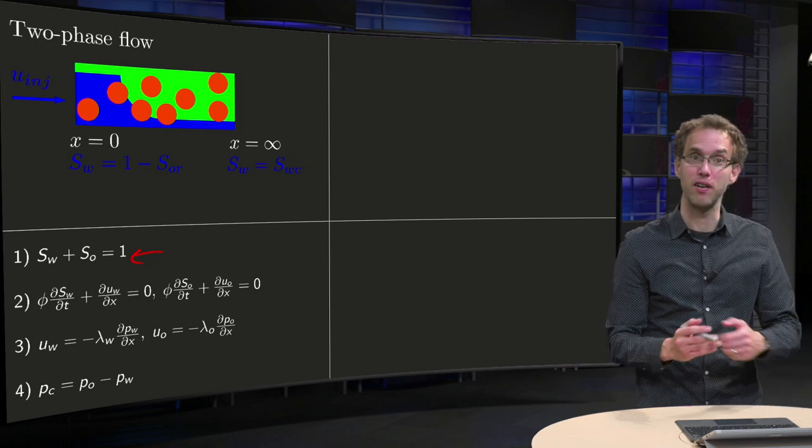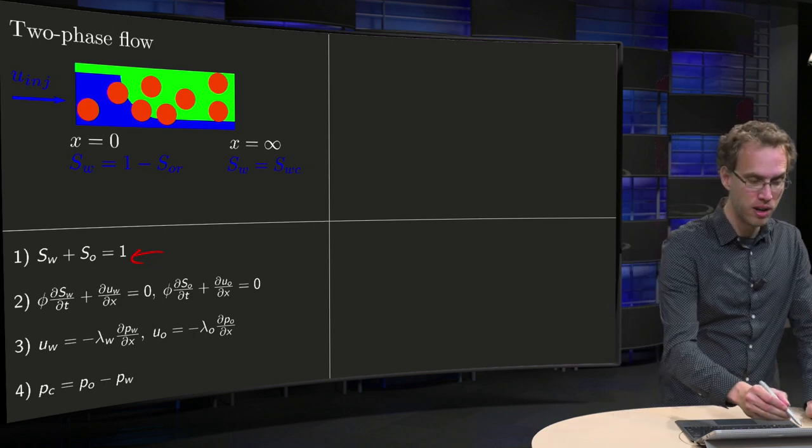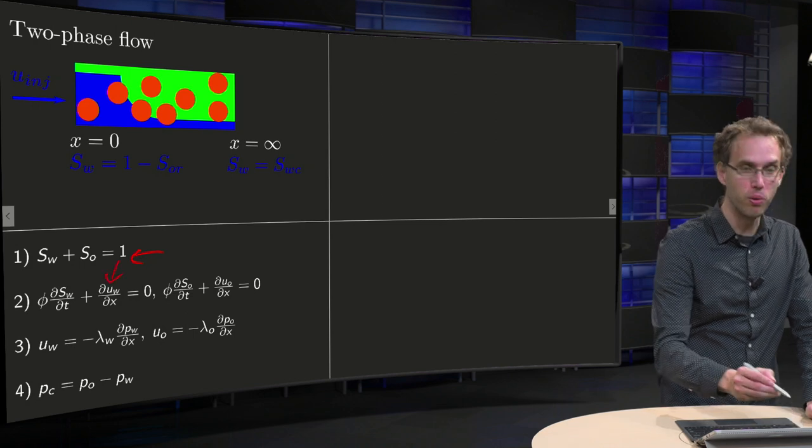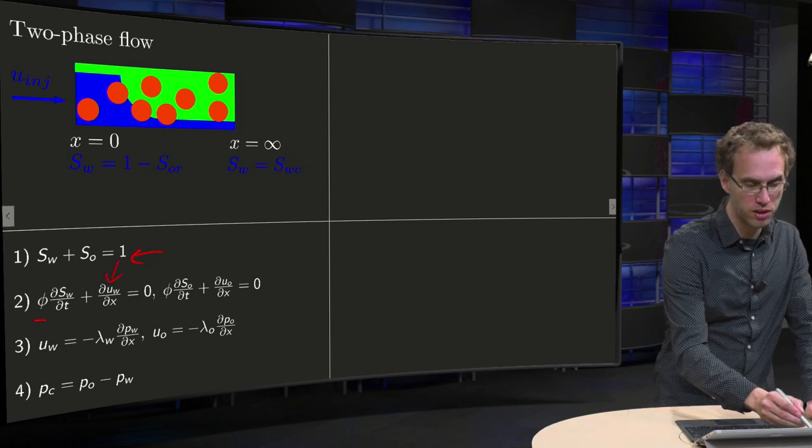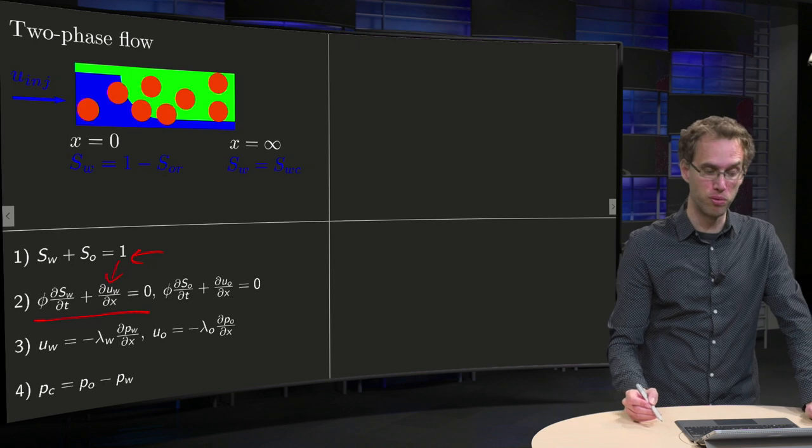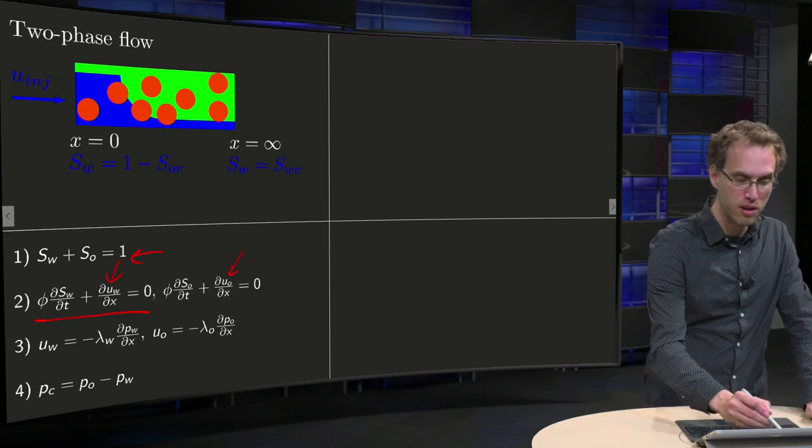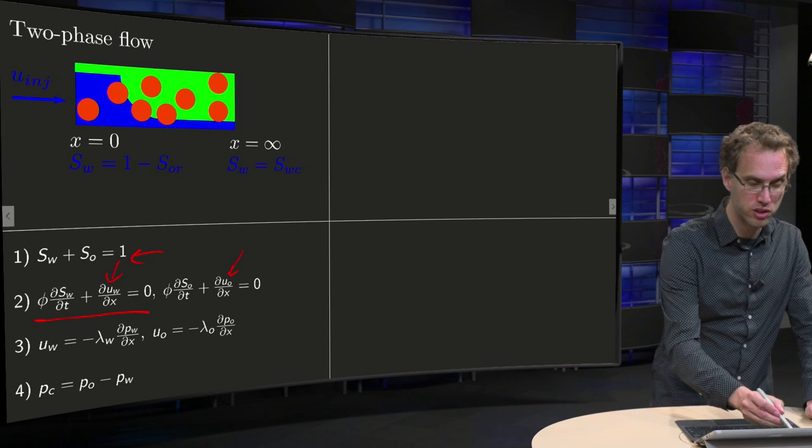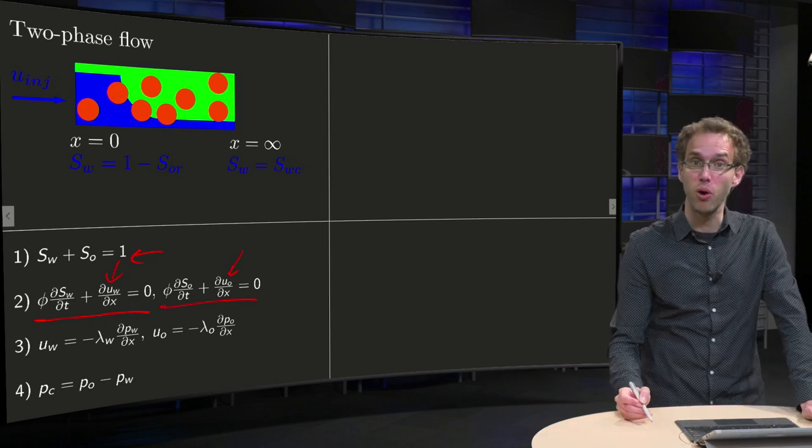Then second, we have the mass balances. We have the volumetric flow of water, which gives us the mass balance for the water, and the volumetric flow of oil, which gives us the mass balance of the oil.